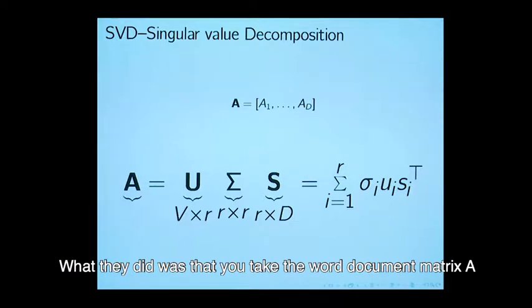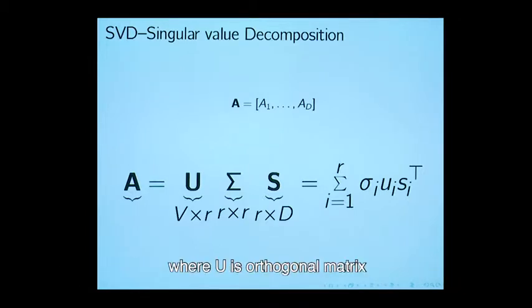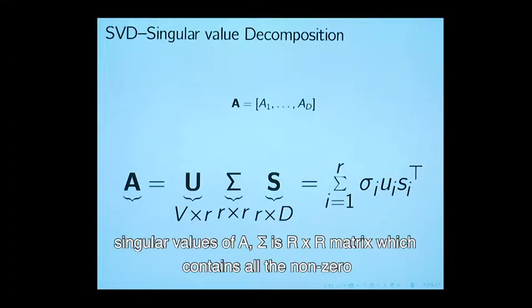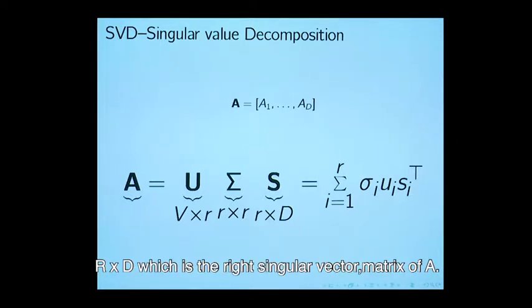What we did was that you take the corpus, the document corpus, document-word document matrix A, and do a singular value decomposition of that, where U is orthogonal matrix of size V cross R, where R is the non-zero singular values of A. Sigma is a R cross R matrix which contains all the non-zero singular values, and S is another orthogonal matrix R cross D, which is the right singular vector matrix of A.